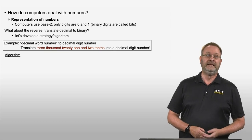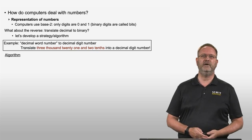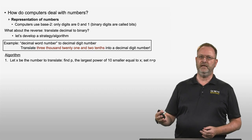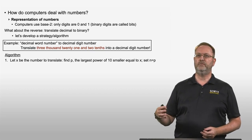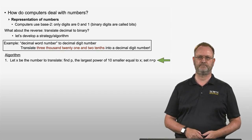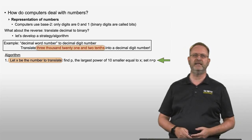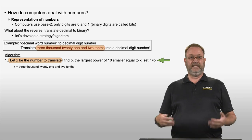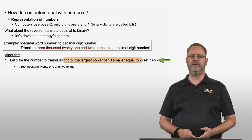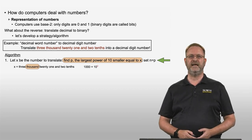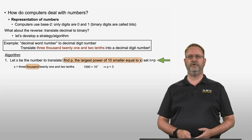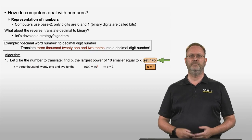The task is to translate the word number 3,021 and 2 tenths into a decimal digit number. The first step of the algorithm is to let x be the number to translate, then find p — the largest power of 10 that is smaller or equal to x — and set the variable n equal to that largest power p. So, x is 3,021 and 2 tenths. The largest power of 10 smaller or equal to x is 1,000, which is 10 to the power 3, so p equals 3, and we set n equal to 3.